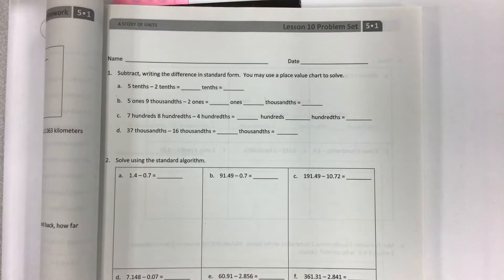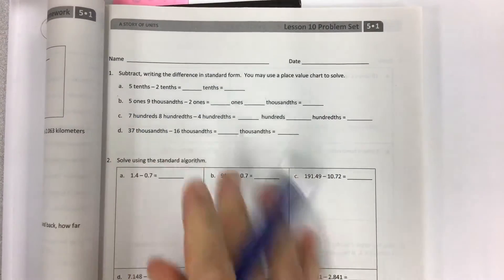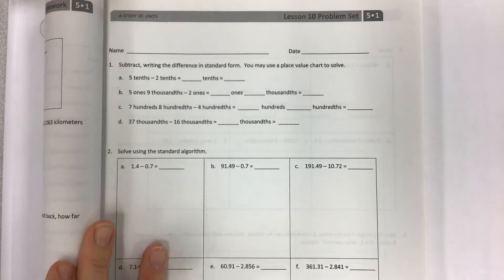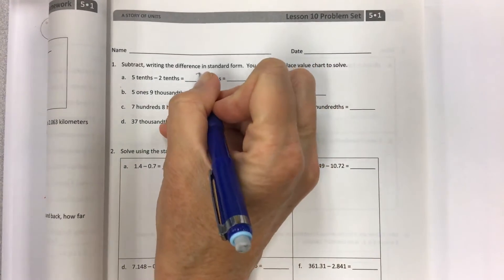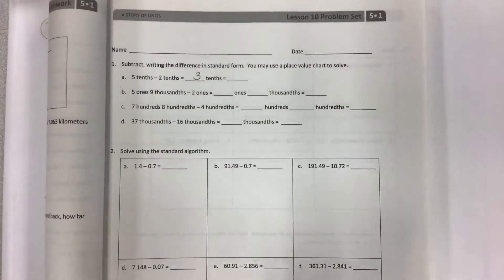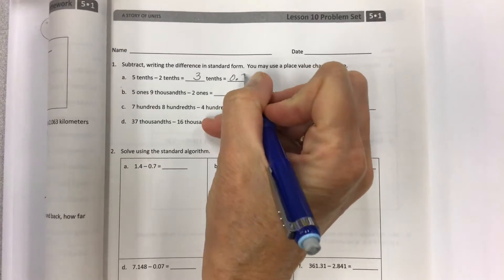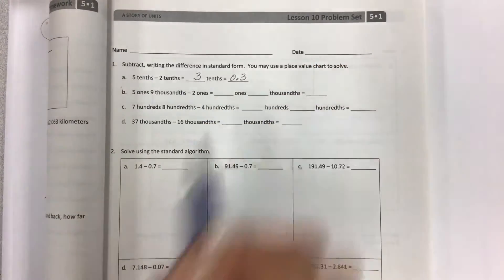When we're talking about the same form, so it's 5 tenths minus 2 tenths, it's just simple subtraction, and we get 3 tenths, and this is going to look like 0.3 or 3 tenths in standard form.